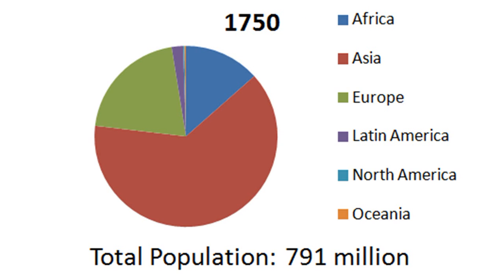Here is the first of the pie charts, showing what percentage of the total world population was found on each continent for each year. Oceania — Australia and surrounding islands — won't make up a significant chunk. Pay attention especially to Asia, Africa, and Europe in the succeeding slides. The total world population for each year is listed at the bottom. In 1750, out of 791 million people, more than half were in Asia.